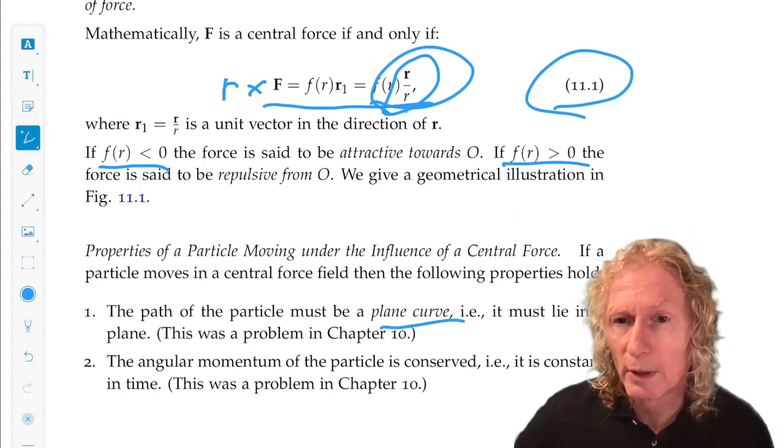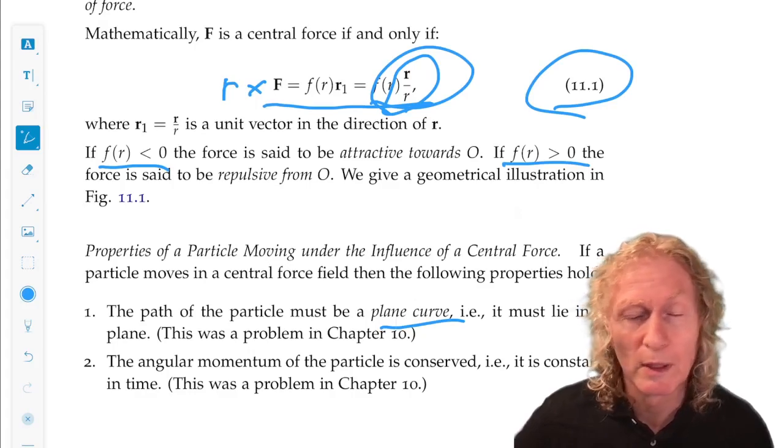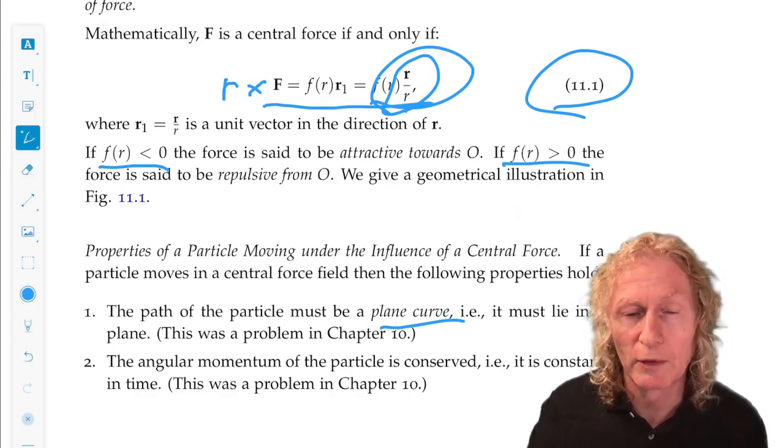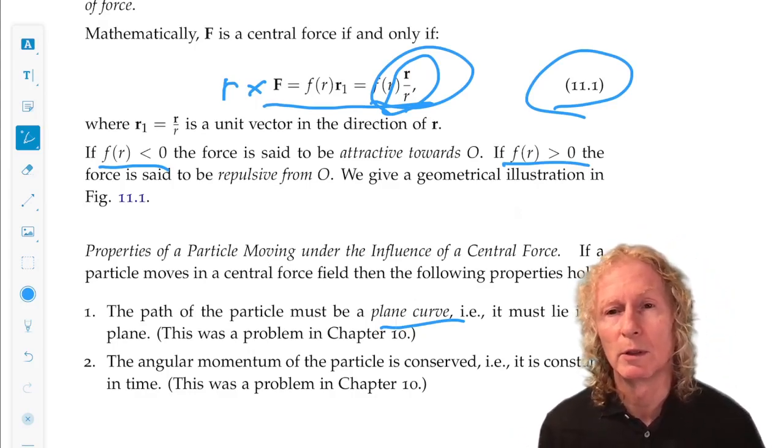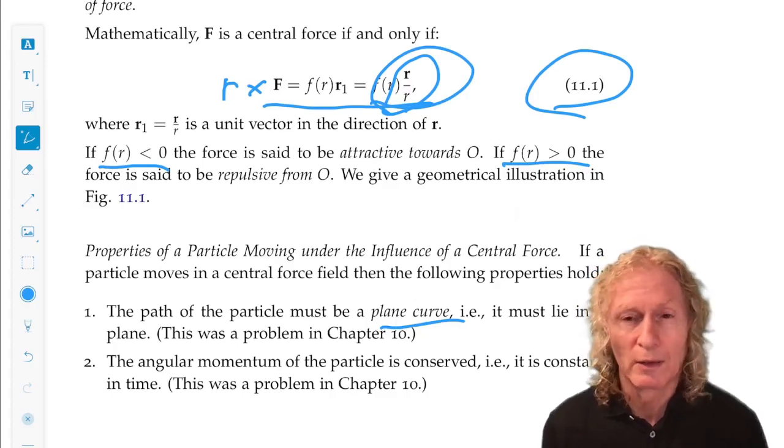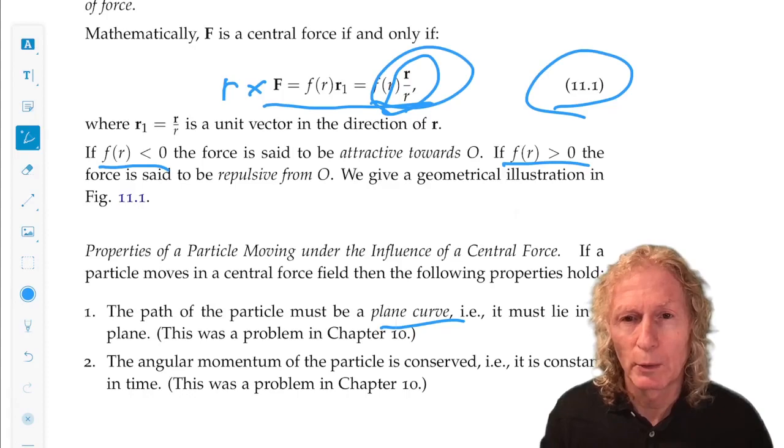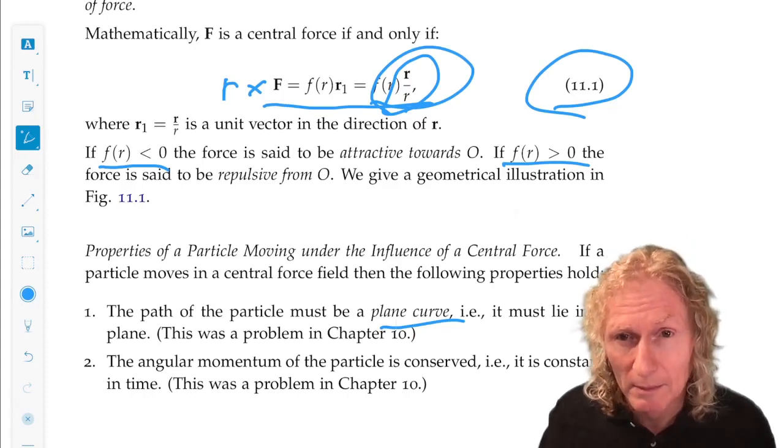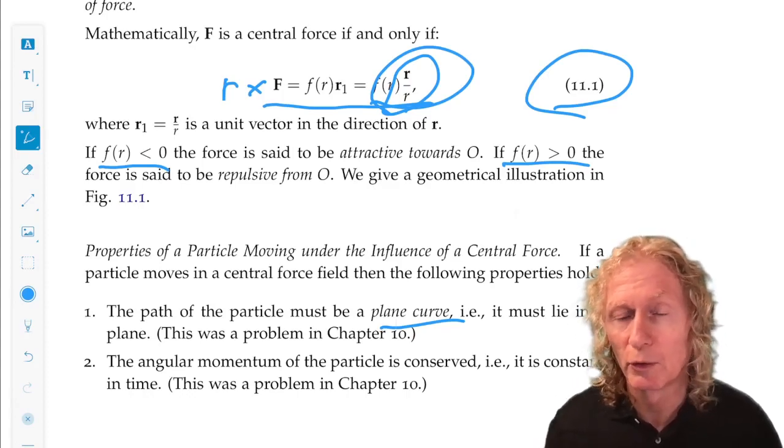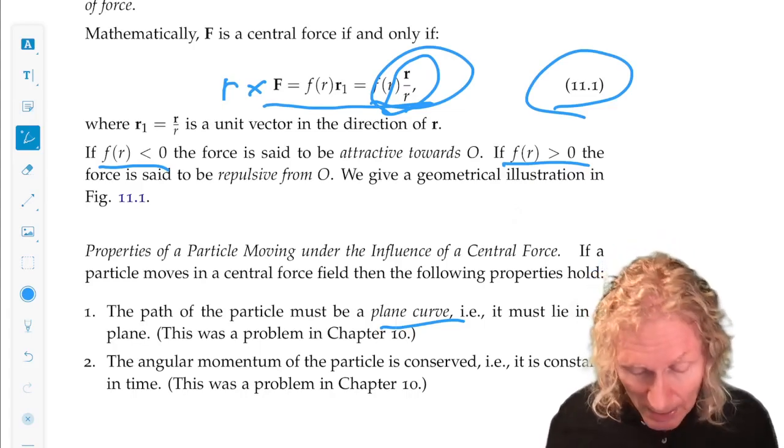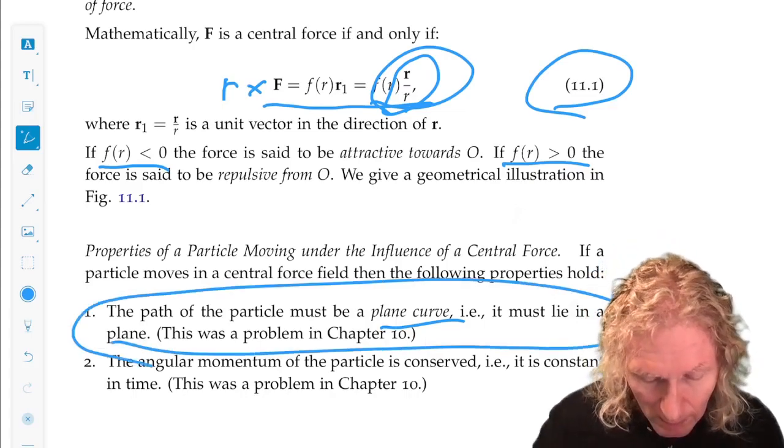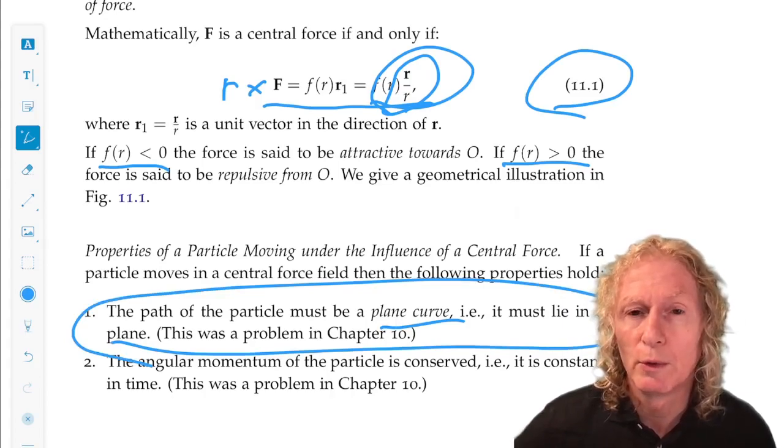So this tells us that the torque is zero, which means angular momentum is constant. Now, angular momentum in three dimensions is a constant vector. A constant vector in three dimensions defines a plane—that is, a set of all vectors perpendicular to that vector. And that is the plane in which the particle moves.